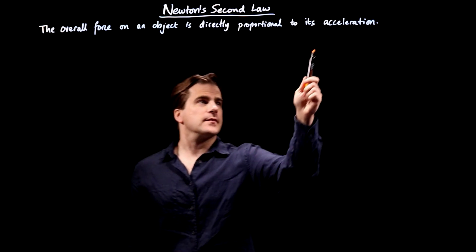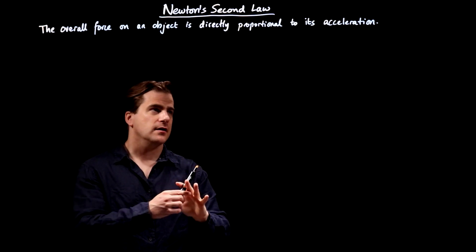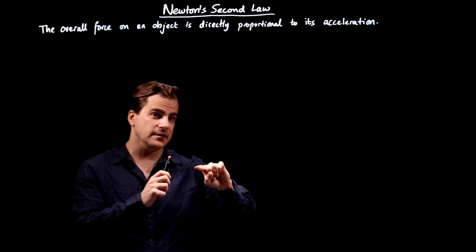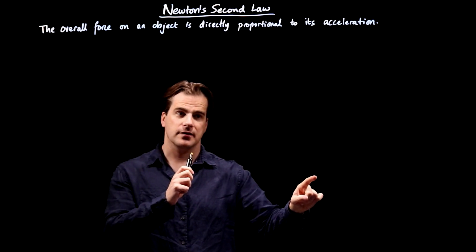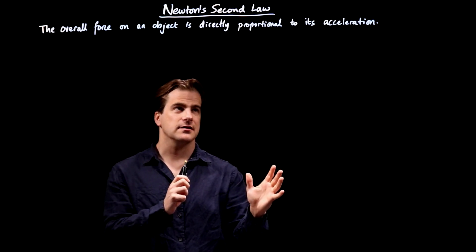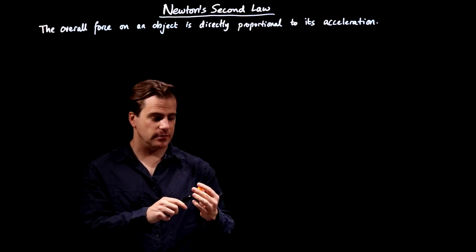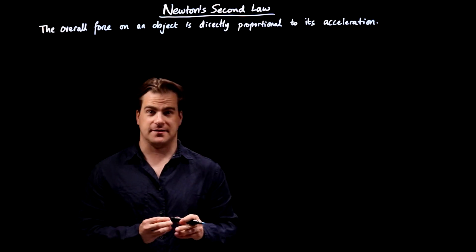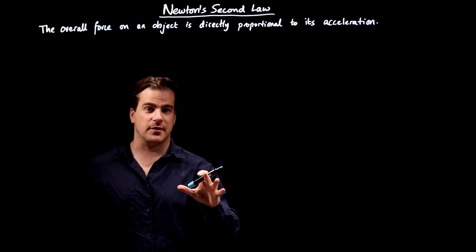So if you're accelerating, it means you might actually still be going at the same speed — a constant speed — but your direction is changing. And that's very important. This is all best illustrated by the International Space Station, which is currently flying around the Earth at about 17,000 miles an hour.